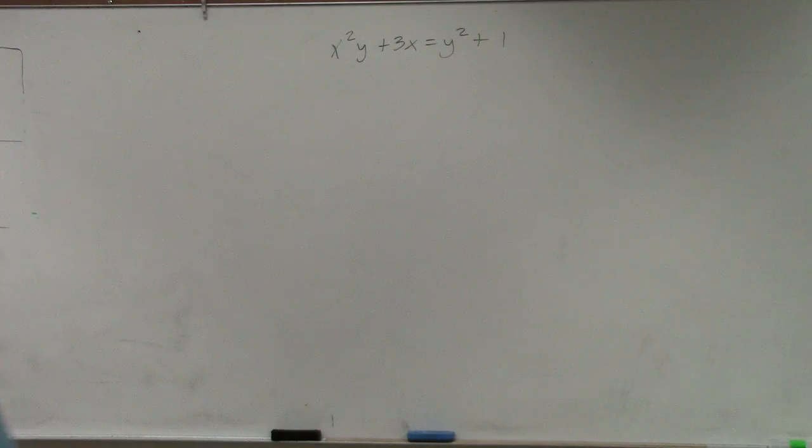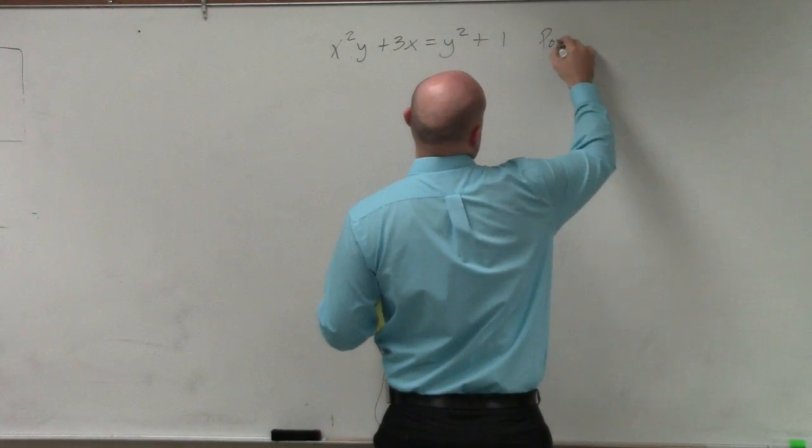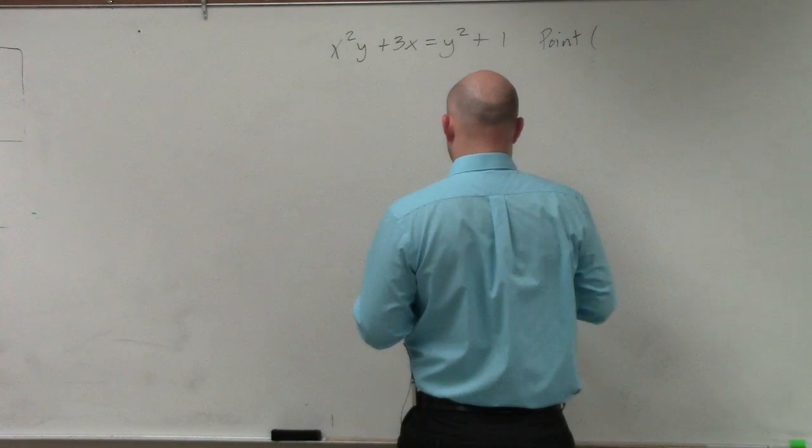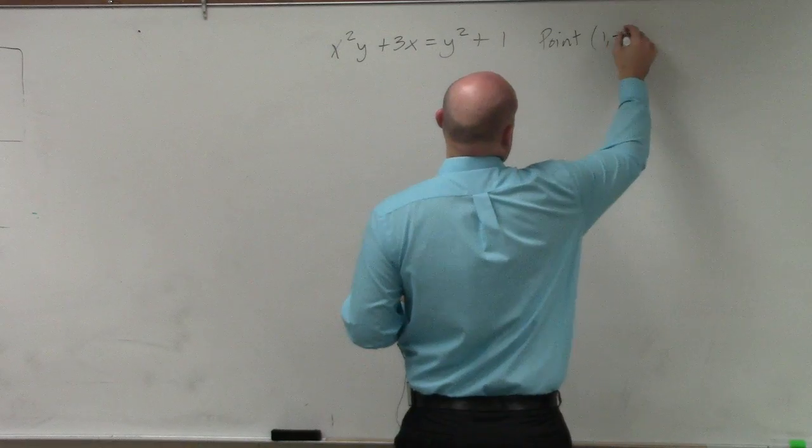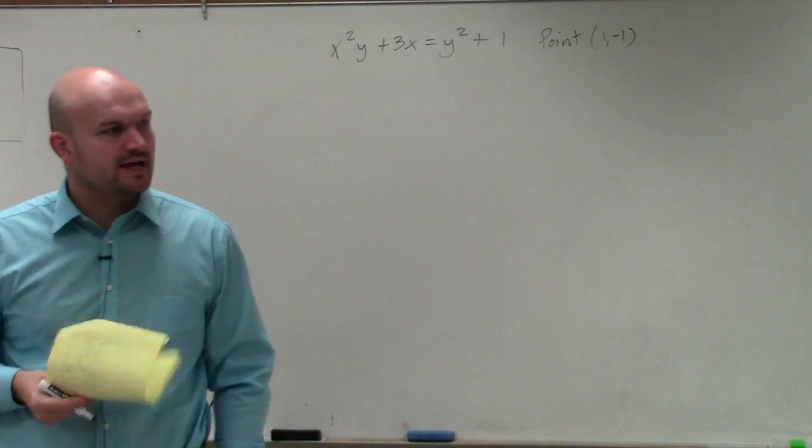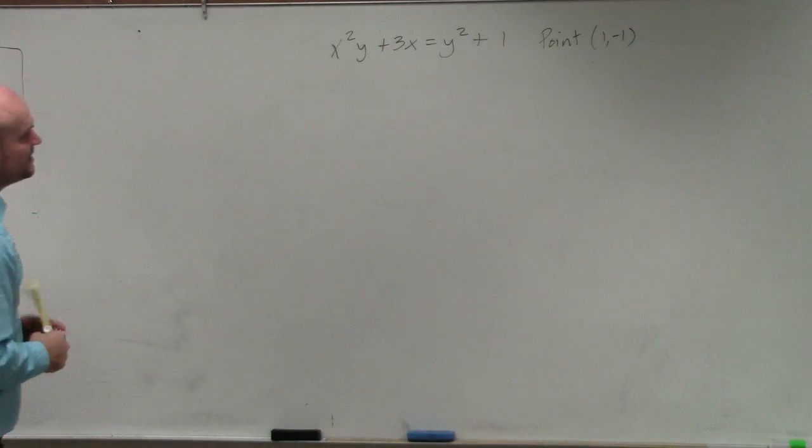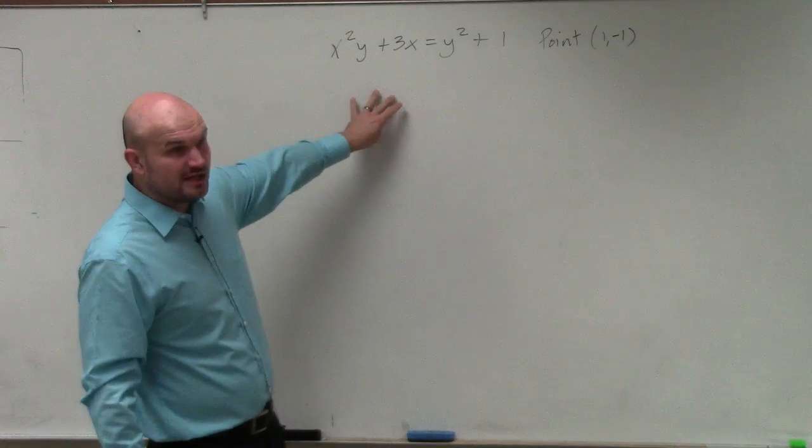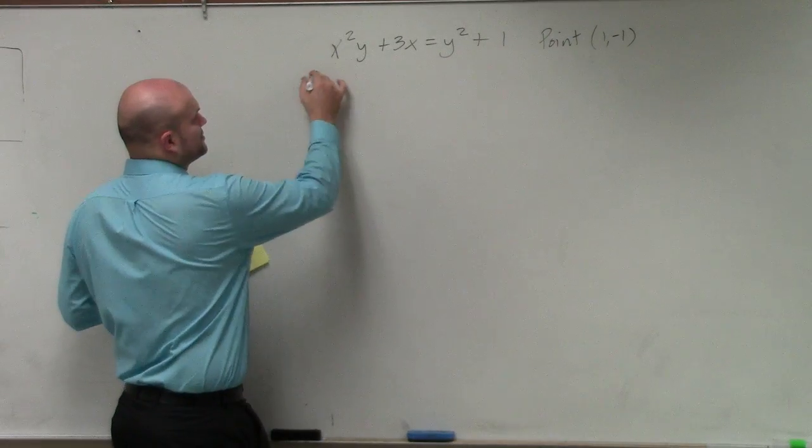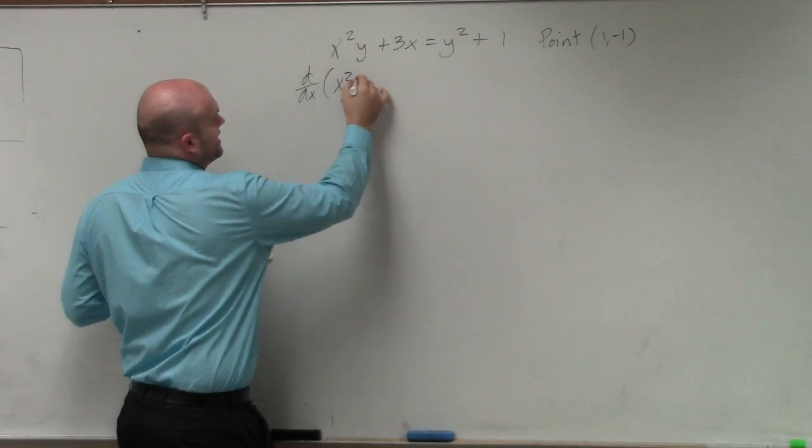All right, so we want to find the slope at the given point (1, -1). What we learned yesterday is when we need to take the derivative of an implicit equation, we're going to take d/dx on both sides.